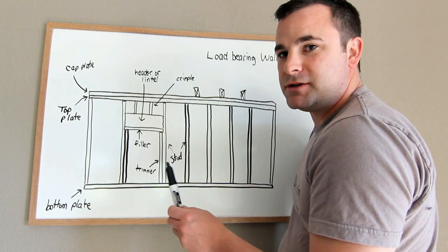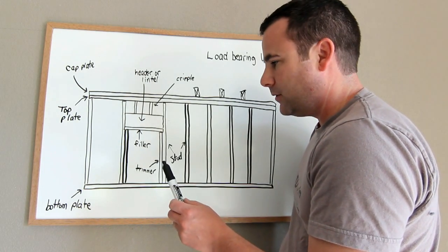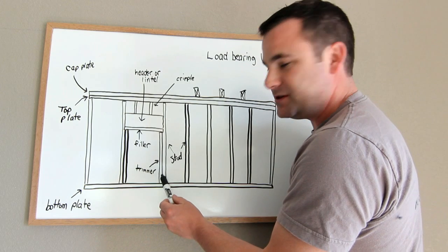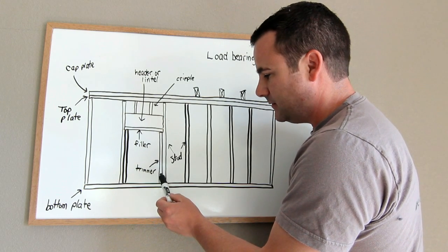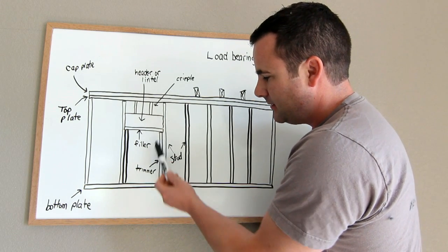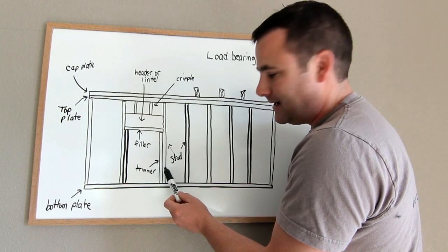When I frame my doorways, I always start with my trimmers. You want to figure out the length of those. The trimmer is what's beside the stud.